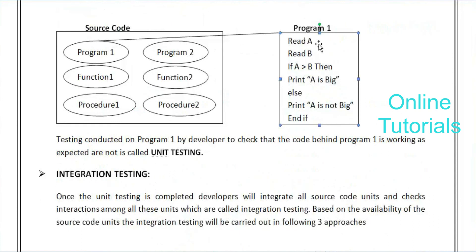For example, there is a program checking whether A is bigger or not. If A equals 20 and B equals 30, the output is 'A is not big.' The developer checks whether, after executing the program, the expected output 'A is not big' is actually being given — that is unit testing, or simple component testing: testing individual components, individual groups.